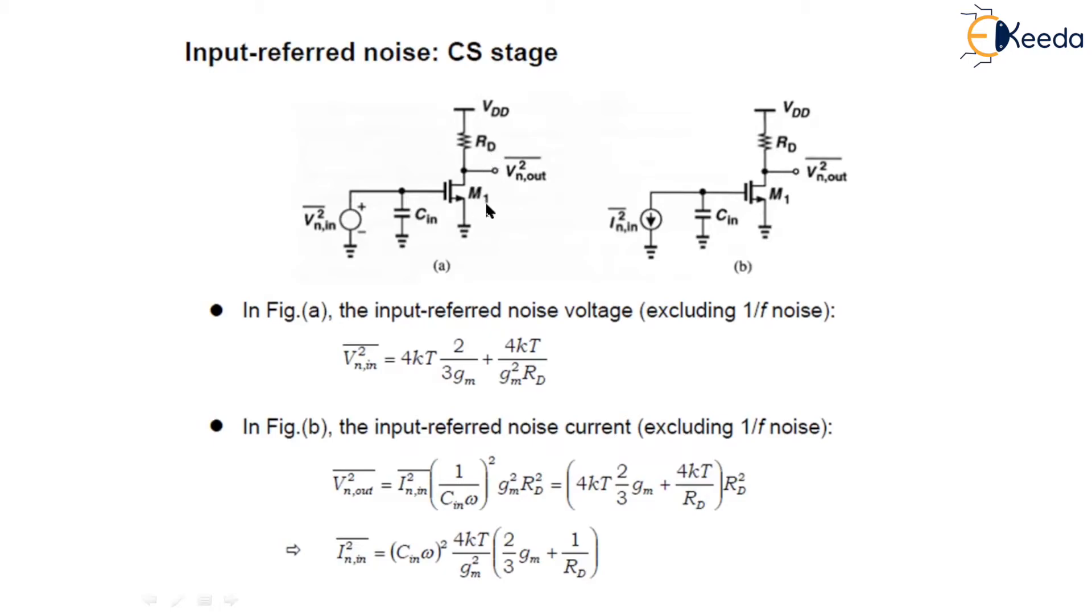Let's first find out the input-referred noise voltage using this technique. The input-referred noise voltage is given by 4kT·γ/gm, which is simply 4kT·(2/3)/gm, plus due to RD it is given by 4kT/(gm²·RD). So this is the input-referred noise voltage.